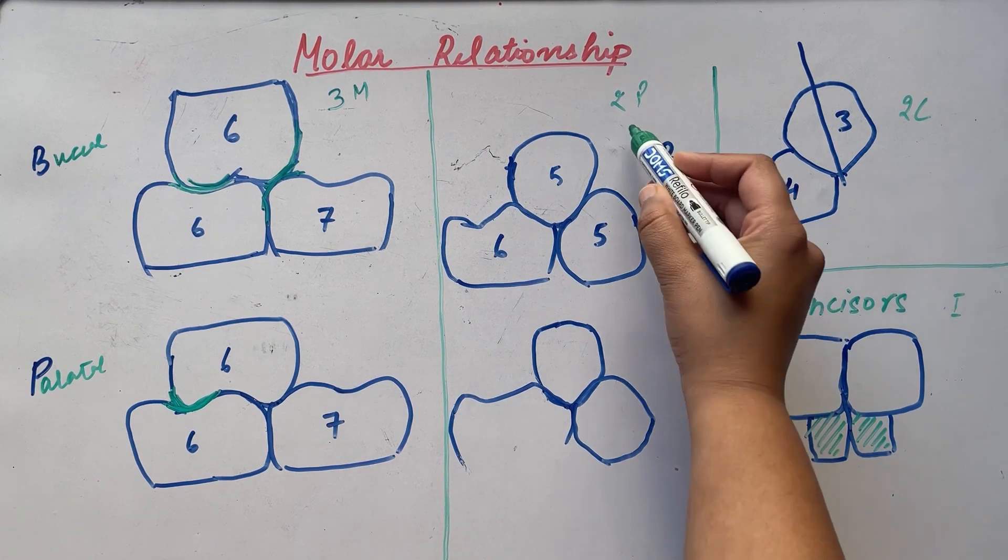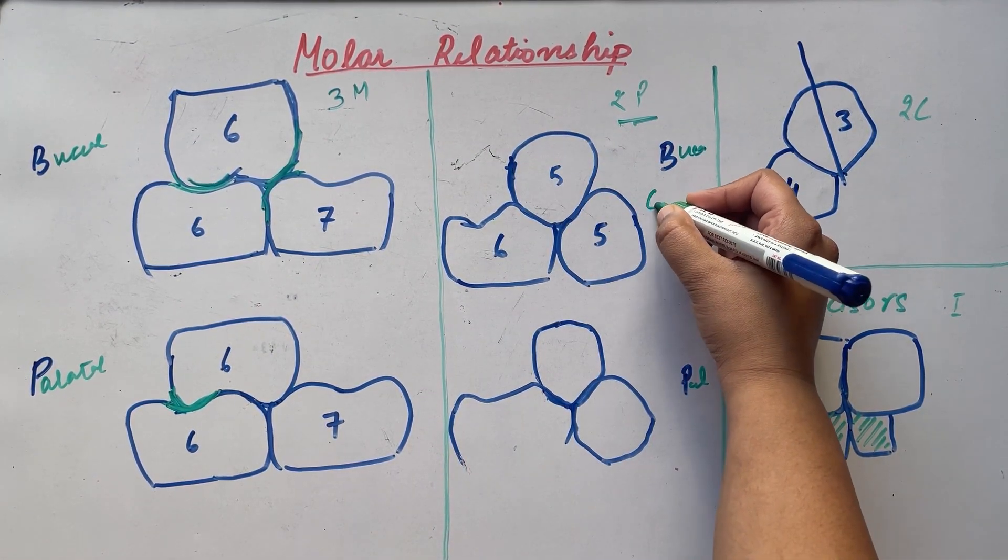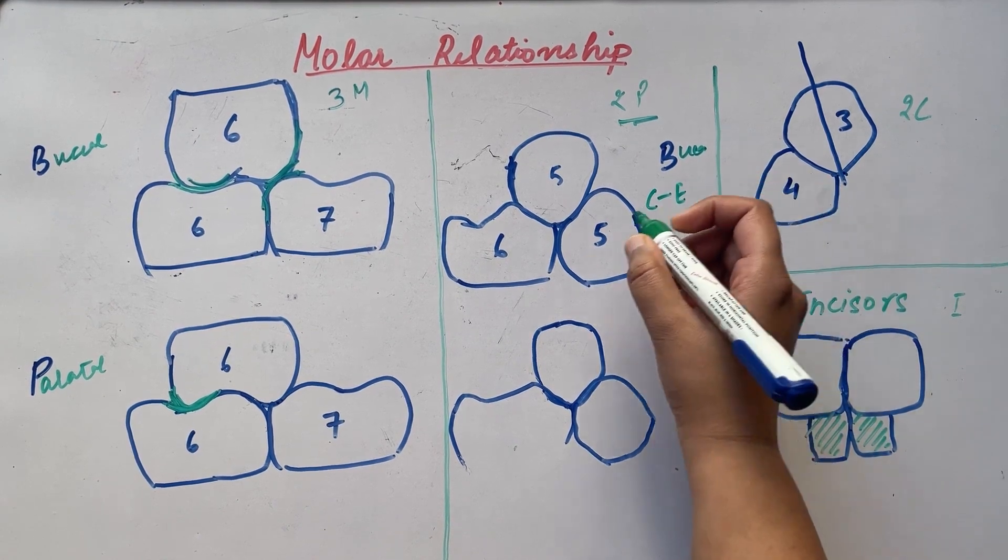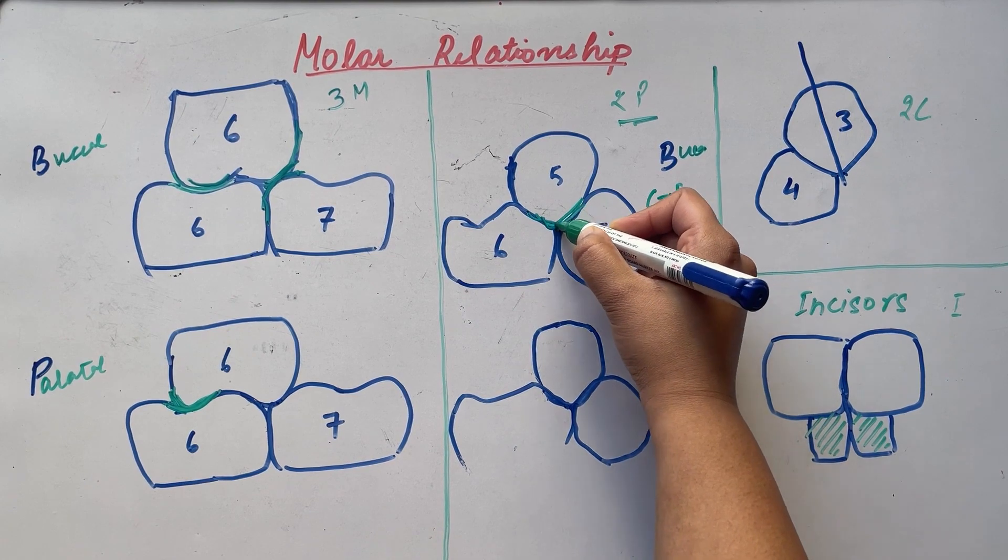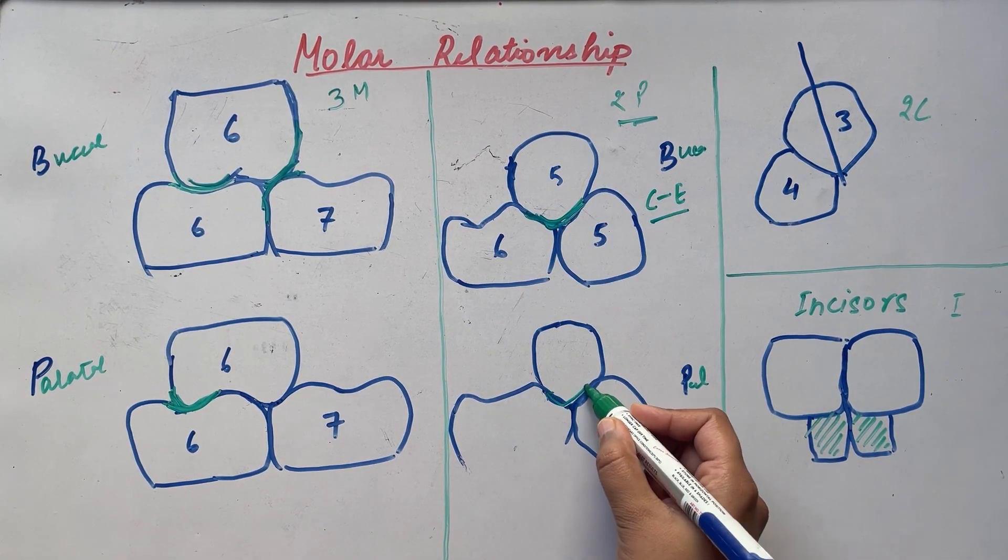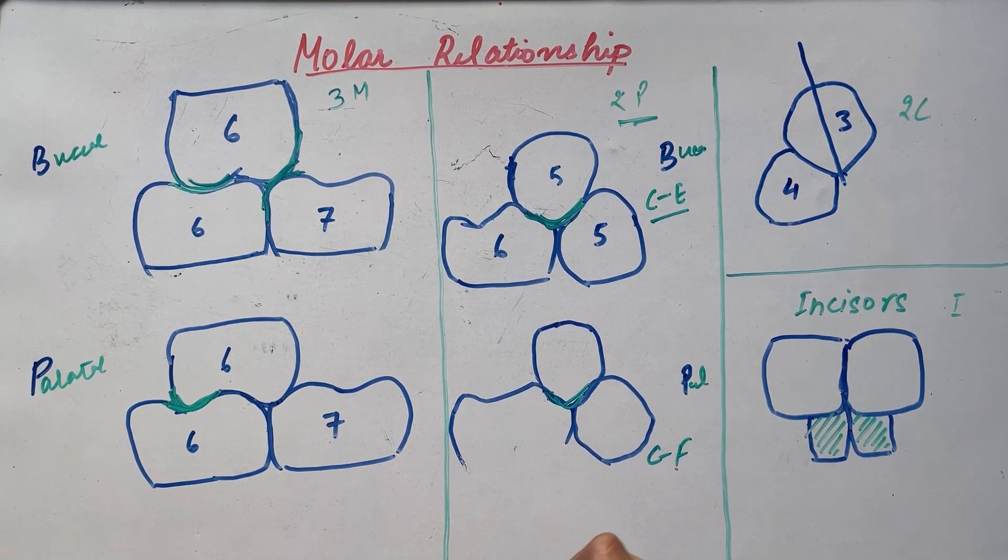The next 2 points are for premolar. The 4th point is, the buccal cusps of the maxillary premolars have cusp embrasure relationship with the mandibular premolars. The 5th point is that lingual cusps of maxillary premolars have a cusp fossa relationship with the mandibular premolars.